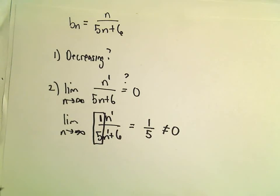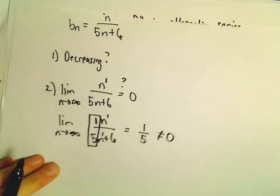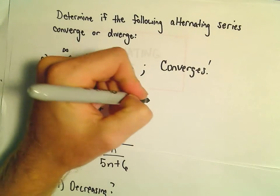Well, that's not 0, so in this case, the conditions aren't satisfied, and we would simply say that this series diverges.